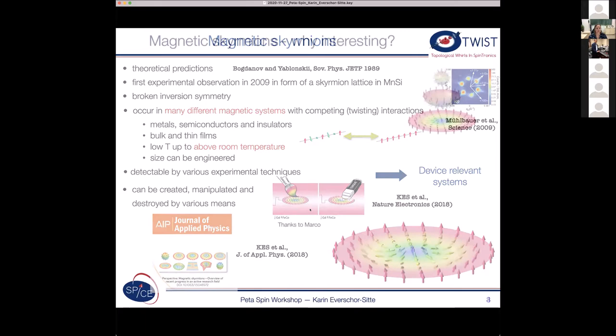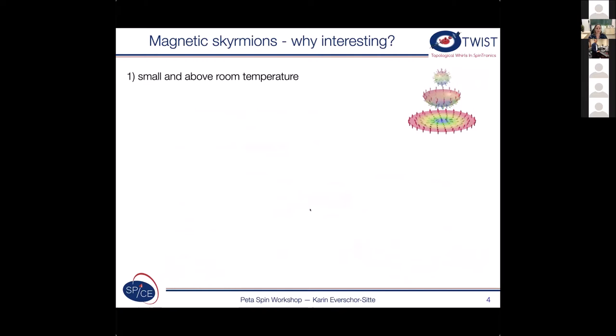So why are magnetic skyrmions or these magnetic textures interesting at all? First of all they can be rather small and they have been observed above room temperature. And this topology, so we are dealing with some topological magnetic textures. This you can see here a little bit on the right so you can take a skyrmion and kind of fold it to a sphere and thereby you see that you get a topological index of one because they cover one time the sphere. They do give them some additional stability.